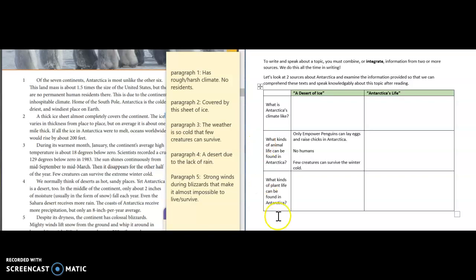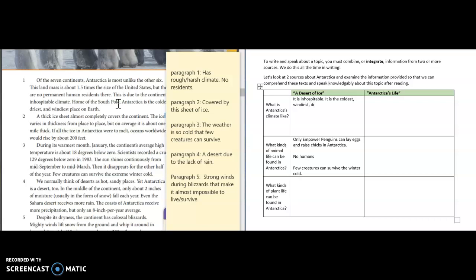So now we're going to jump up to the first guiding question which was what is the climate like? Well if you remember in paragraph one they actually described the climate as inhospitable, right? It is inhospitable. And then they also said that it is the coldest, windiest, and driest place on Earth.